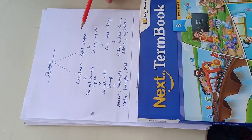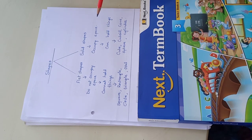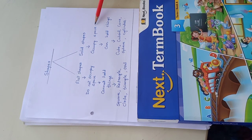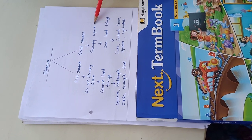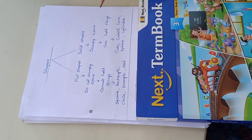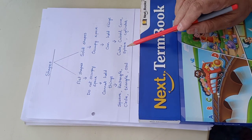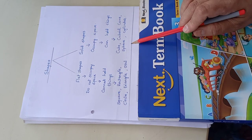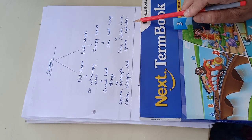What are solid shapes now? Solid shapes are those which can occupy space and they can hold things in them. Examples are cube, cuboid, cone, sphere and cylinder.